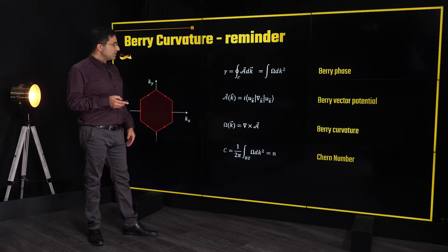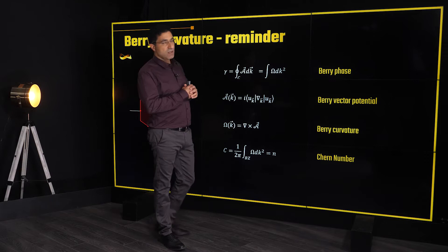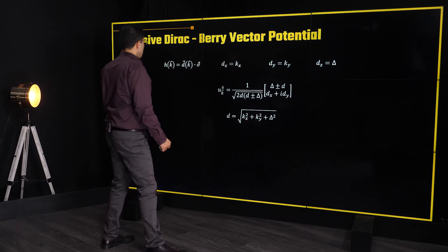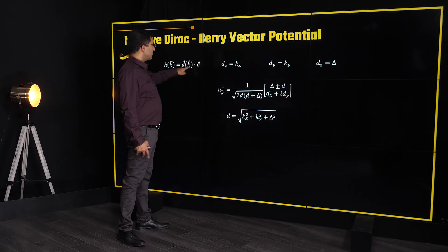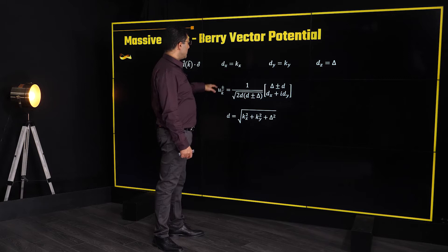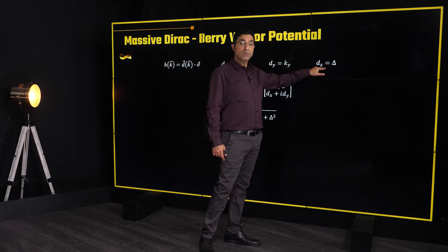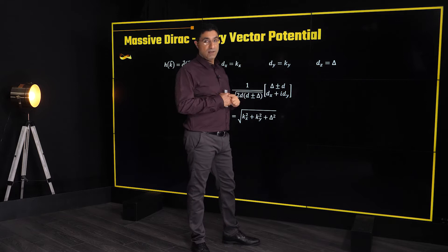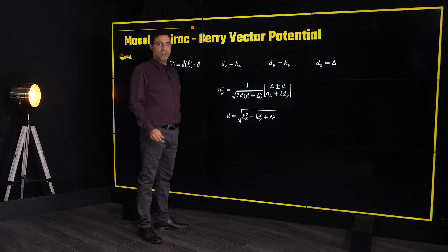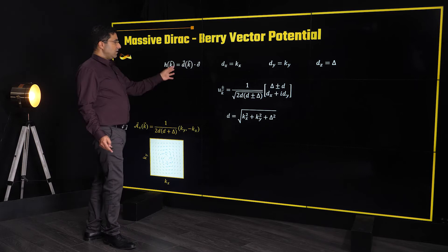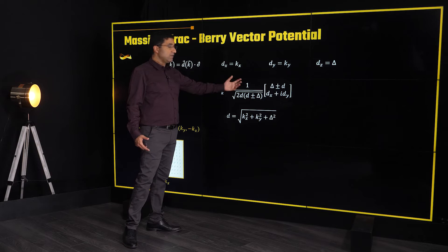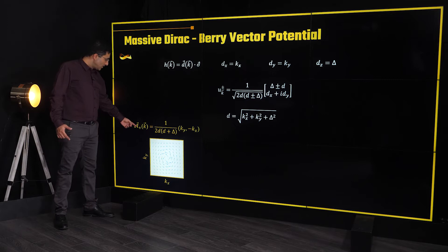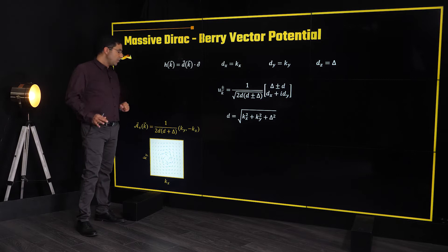Now let's focus on how the Berry phase and Berry curvature look for a massive Dirac Hamiltonian — the Hamiltonian we introduced in the first talk when we discussed graphene. It's described by a D-vector: its x-component is kx, its y-component is ky, and its z-component is δ, which is the mass that opens a gap at the Dirac point. Using the formula from the previous slide, we can derive directly from the internal structure of the wave function — the pseudo-spin — the vector potential. The Berry vector potential for the upper band A+ is presented here.